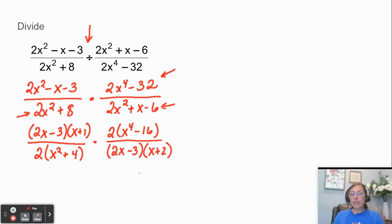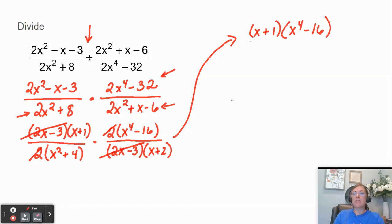Okay now what I'm looking for anything that will cancel. So that's top to bottom. So I see a 2x - 3 on top and a 2x - 3 on bottom. Those go away and then I've got a 2 on top and a 2 on bottom. So let's look at what we have left. We have an x + 1 on top. We have an x⁴ - 16 on top. And then I've got an x² + 4 on bottom and an x + 2.